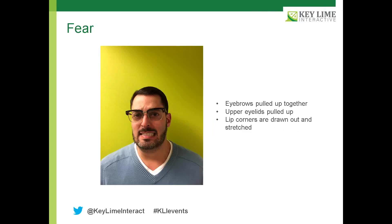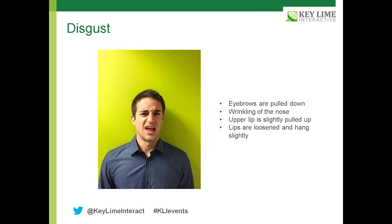The physical characteristics that make up the fear facial expression: the eyebrows are pulled up and together, the upper eyelids are also pulled up, and the lip corners are drawn out and stretched. There's also a gritting of the teeth — it's kind of like, oh, what's going to happen next? And obviously, if what happens next is not what the person was hoping for, that's when you reach other emotions like anger or disgust, just like our next one.